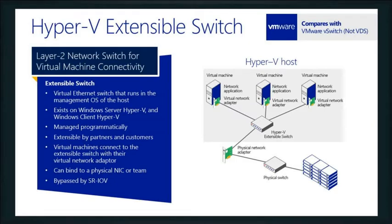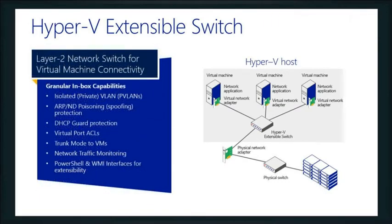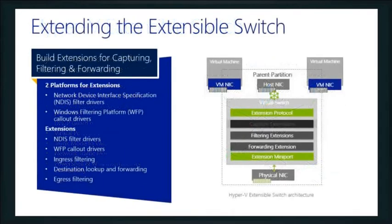We do bind to a physical NIC or a team. We can bypass it if we're using SR-IOV. We can do DHCP guard protection, which is designed to help protect against man-in-the-middle attacks — if somebody has a rogue DHCP server sitting around to intercept your requests, this prevents that. We can do network traffic monitoring. We can use PowerShell and WMI interfaces to do all kinds of things inside the switch.